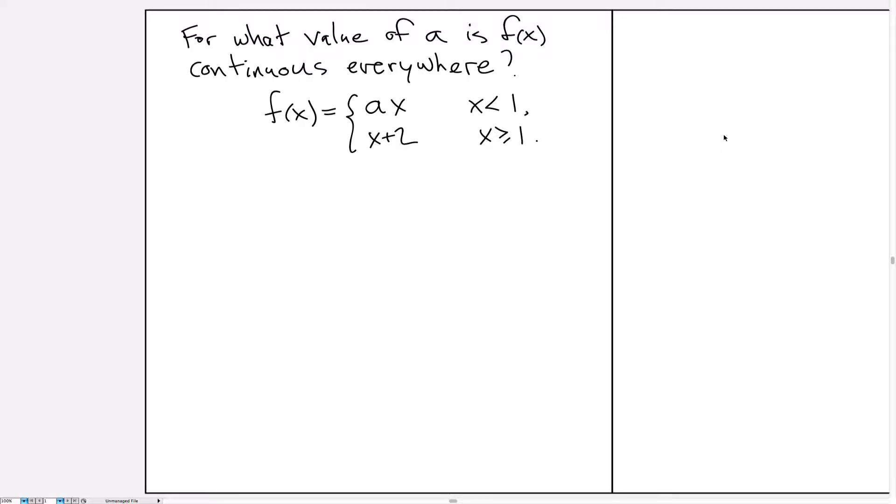So let's suppose we have a problem we're working on. For what value of a is f(x) continuous everywhere? So for all values of x. If f(x) is defined by the following formula: it's equal to ax when x is strictly less than 1, and it's equal to x+2 when x is greater than or equal to 1.